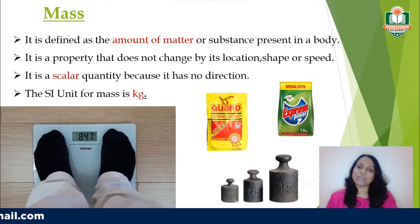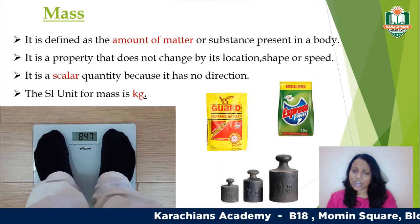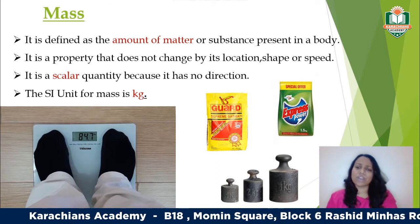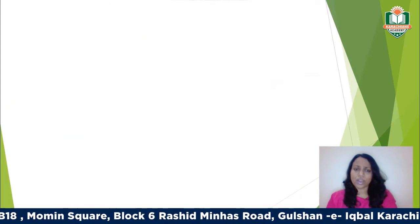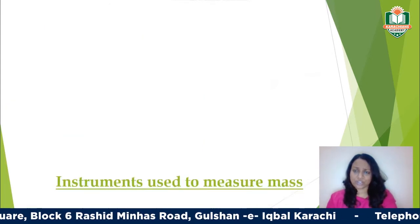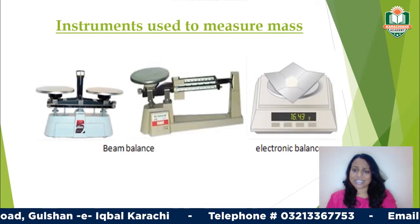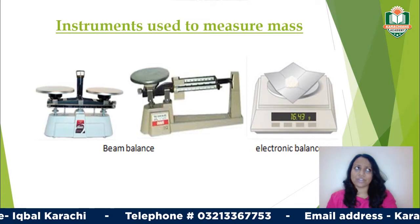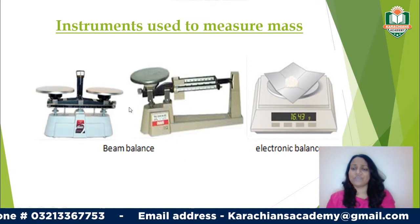The SI unit for mass is kilograms, but we can use smaller values like milligrams, micrograms, and nanograms when measuring smaller masses in labs and industries. For larger masses, we go to megagrams and gigagrams. The most common instruments used to measure mass are balances — you have your beam balance, your electronic balance, and other types of balance.